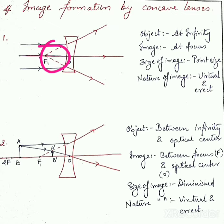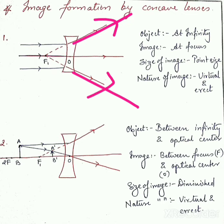We know that whenever rays actually meet, the image will be real, and real images are always inverted. Here, the refracted rays are not actually meeting — we are elongating them in the backward direction and forcing them to meet. So the refracted rays appear to meet, meaning the image formed will be virtual, and virtual images are always erect.